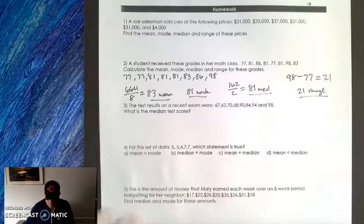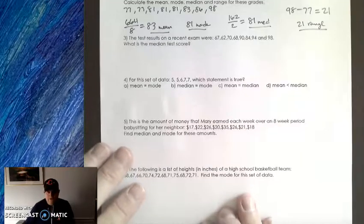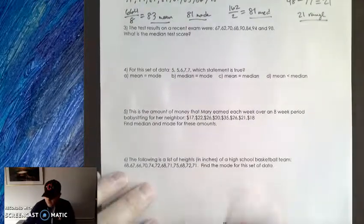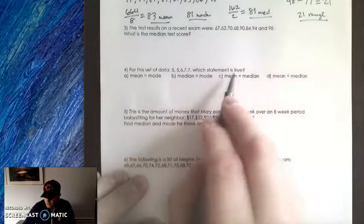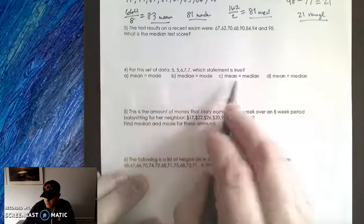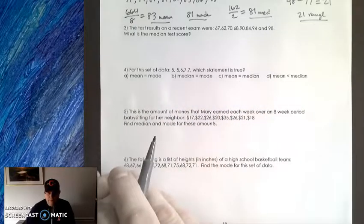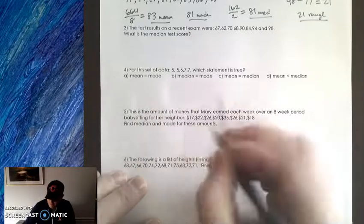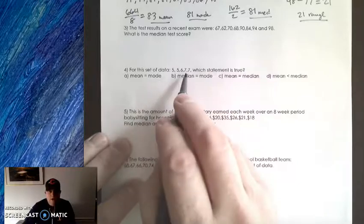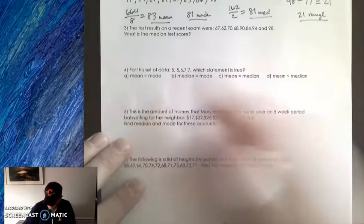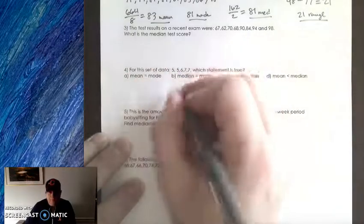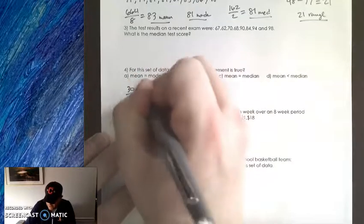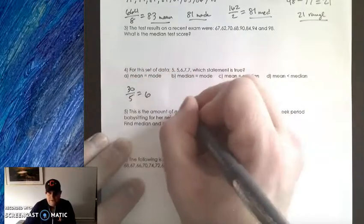The next question I want to go over is question 4. You'll see these questions kind of pop up - it's a comparison question. For this set of data, which statement is true? Mean equal to mode, median equal to mode, mean equal to median, or the mean is less than the median? Essentially, what we need to do is we need to figure out what the mean, median, and mode are. This is easy because all my numbers are listed in order. The mean is all the numbers added up. So the numbers added up is 30, and we divide it by the number of elements, which is 5. So 30 divided by 5 is 6. That's your mean.